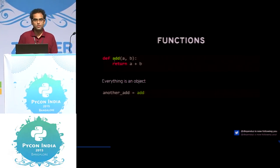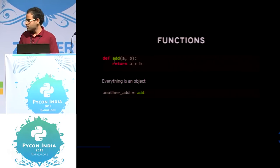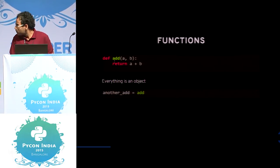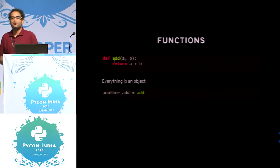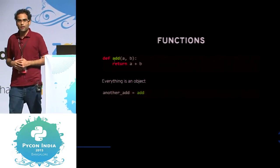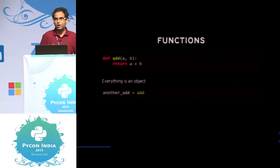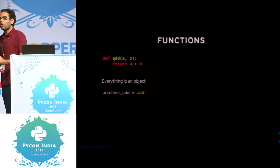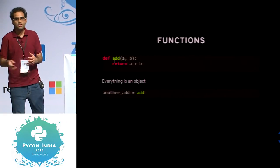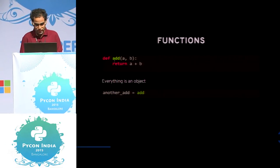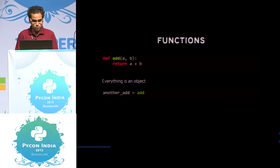How many of you have written Python functions? I'm sure most of you have. This is a classic Python function — it returns a sum of two numbers. Everything in Python is an object. When I say everything, everything is. Even a function is a first-class object. Regular operations that are possible on an object — like addition, subtraction — everything is possible with a function too. Function is a first-class object, and we'll see how.